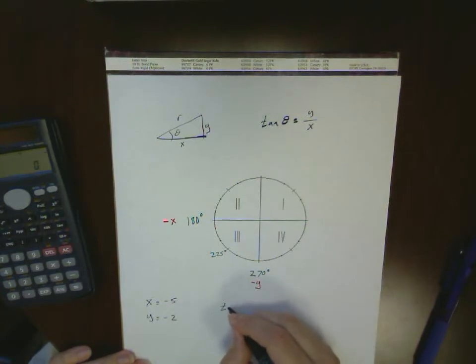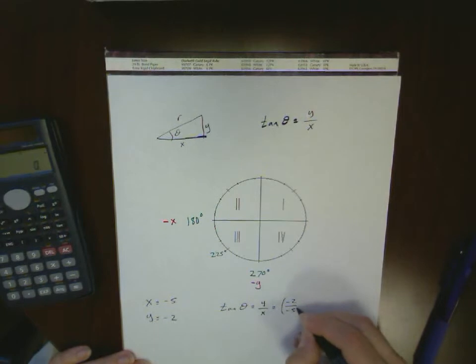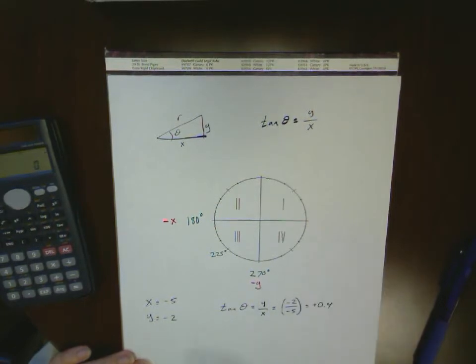To find the angle, I use that the tangent theta is equal to y over x, which is equal to a value of negative 2 over negative 5, which gives me a value of positive 0.4.